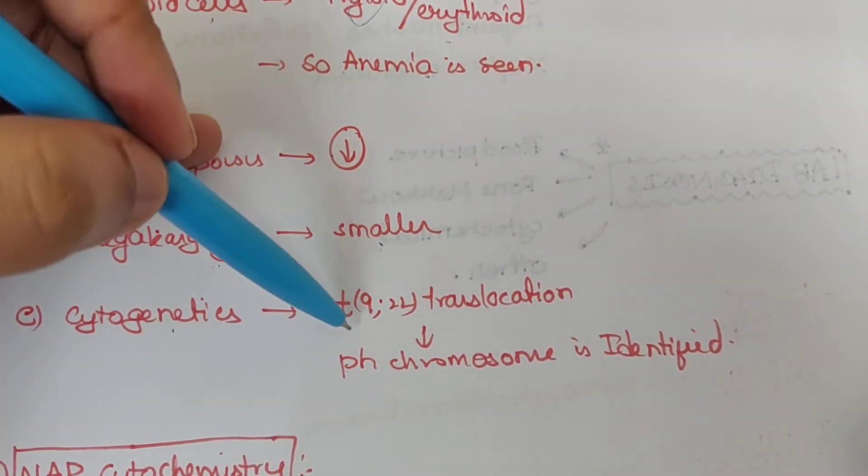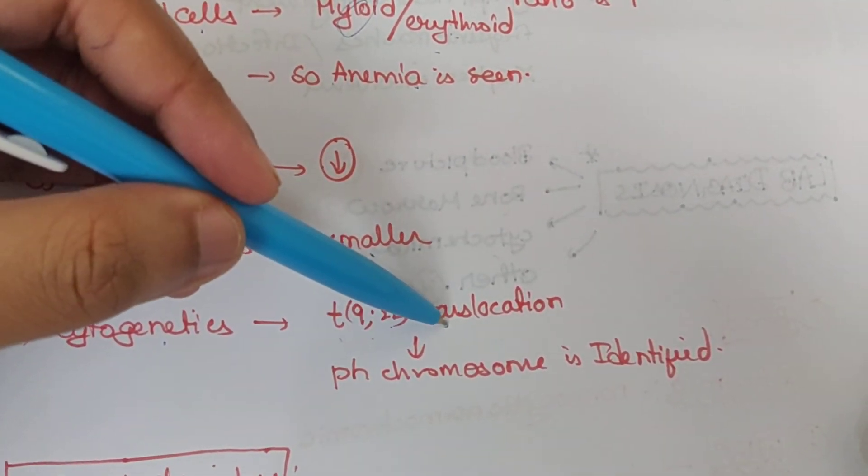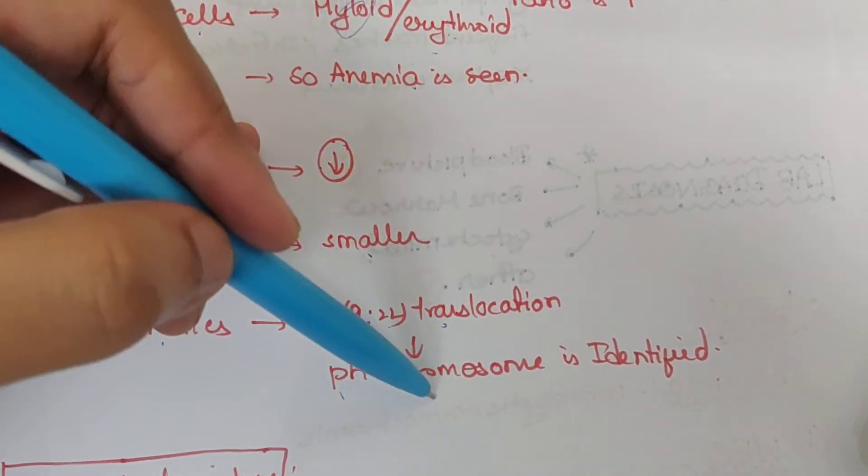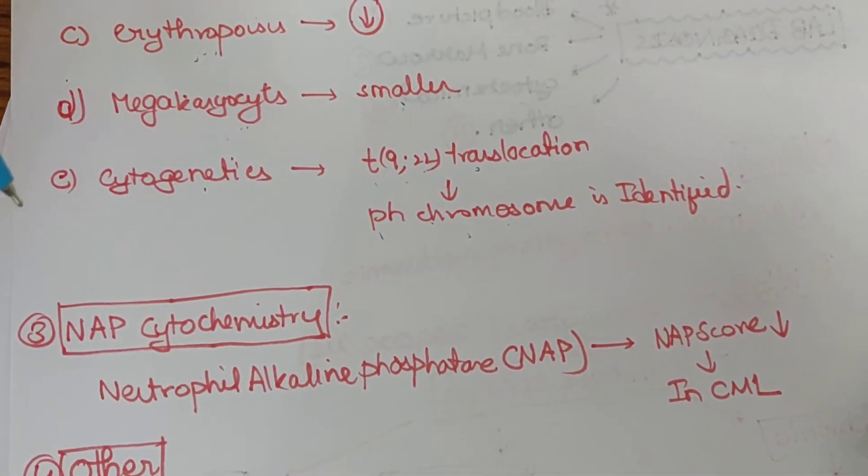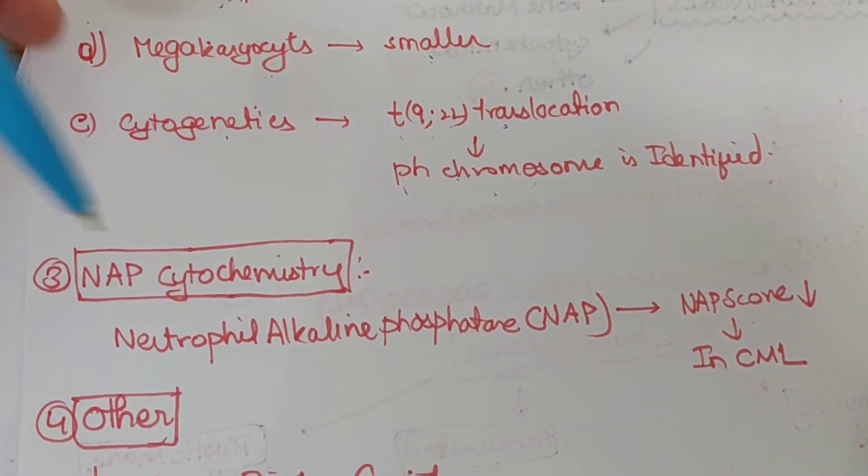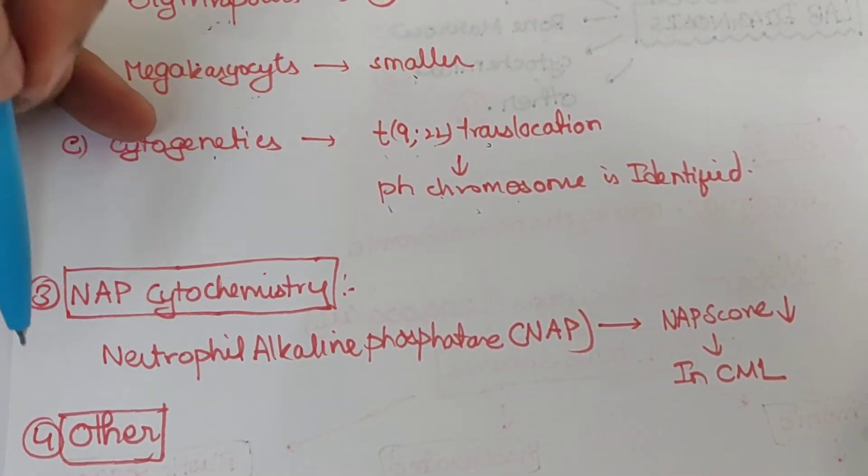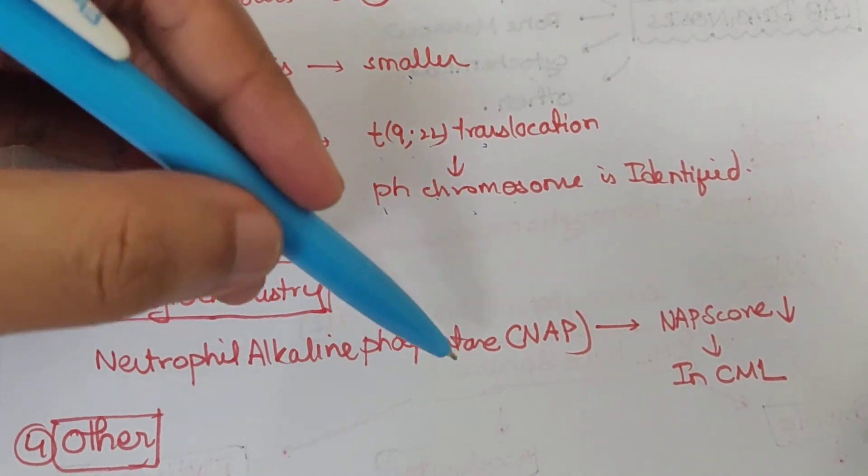In cytogenetics we can see T922 translocation, the Philadelphia chromosome, which we can identify for diagnosis. In cytochemistry we see the neutrophil alkaline phosphatase score.